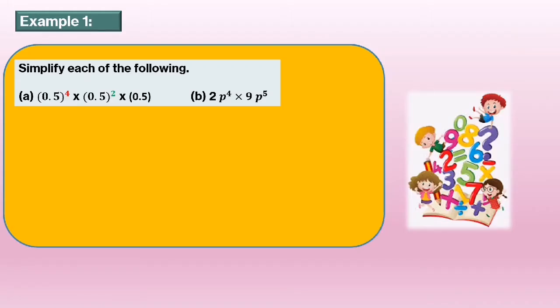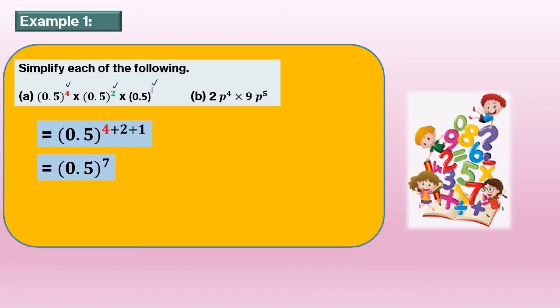To know further, let us discuss Example 1: simplify each of the following. Part a: 0.5 power of 4 times 0.5 power of 2 times 0.5 — here, no power actually means power of 1. So we add all the indices: 0.5 power of 4 plus 2 plus 1 equals 0.5 power of 7.